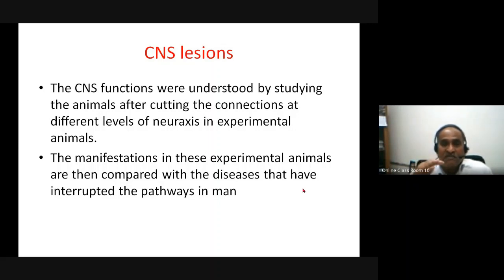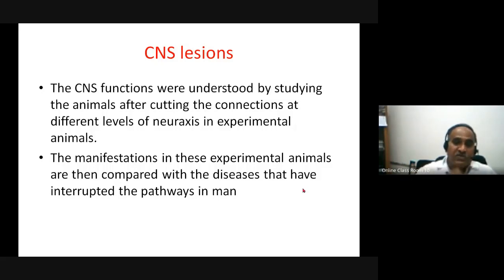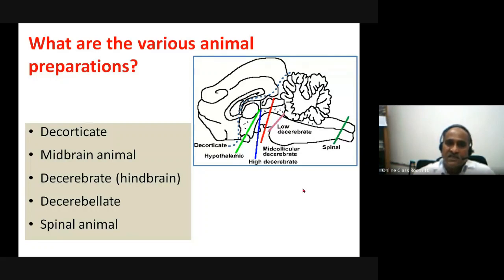The most common animal used for this study is the cat; later, rats and other animals also came into use. The manifestations in these experimental animals are then translated to disease conditions in human beings — whatever happens to the experimental animals, researchers try to examine the corresponding human conditions.